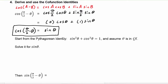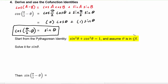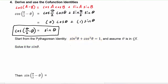We've proven this co-function identity using the difference identity for cosine. Next we'll start from the Pythagorean identity of sine squared theta plus cosine squared theta equals one, and we'll assume that theta is in quadrant one where all the trig functions are positive. We're going to take this equation and solve it for sine of theta, so we would get sine squared theta is equal to one minus cosine squared theta.